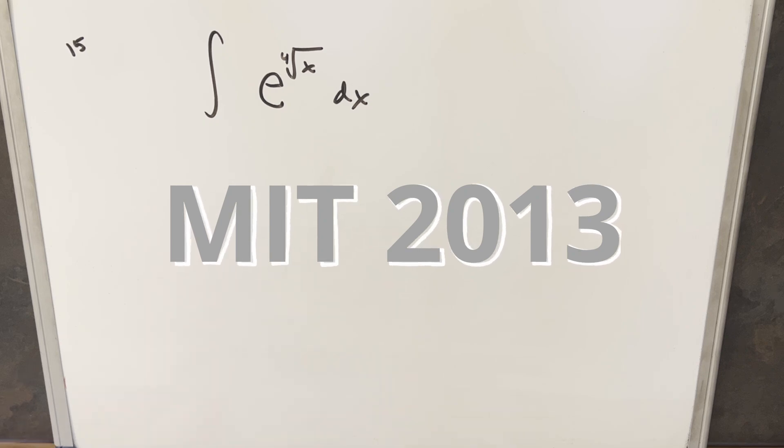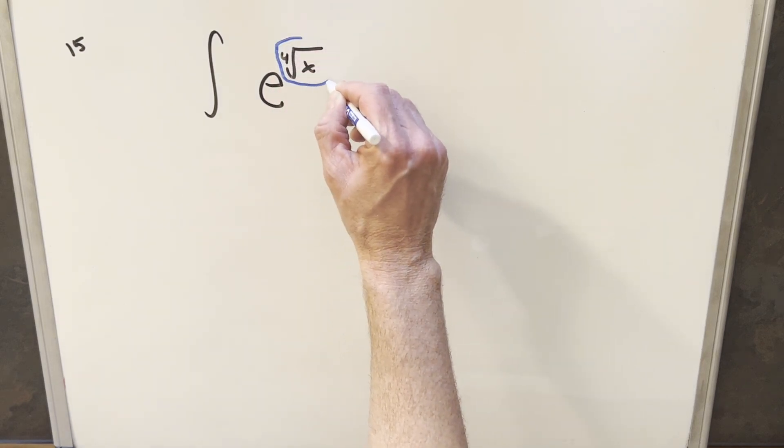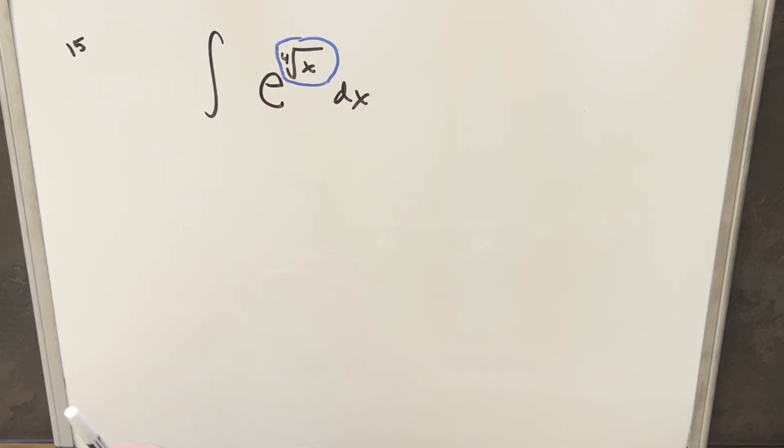We have the integral of e to the fourth root of x dx. Okay, I think clearly what we need to do is just deal with this exponent on the x. If we can clean that up, it's going to be pretty easy.